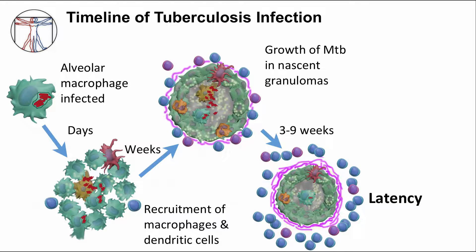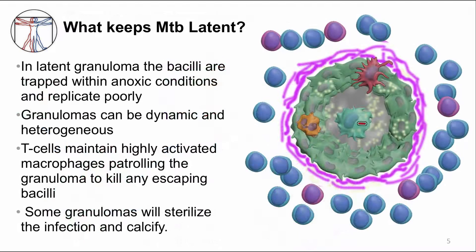Recall the timeline of TB infection from when they first enter the alveolar macrophages to control of replication during latent TB infection. What keeps MTB from actively replicating and bursting out of the granuloma? First, within granulomas, MTB bacilli are trapped in a relatively anoxic condition. MTB replicates poorly in these conditions because they undergo aerobic metabolism.